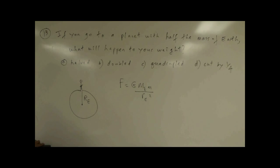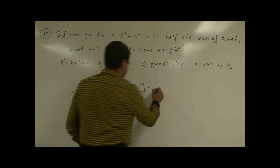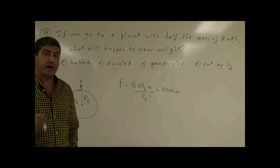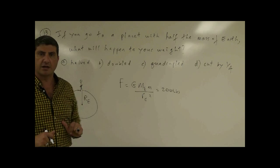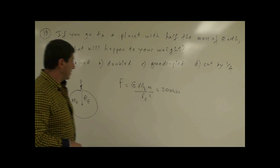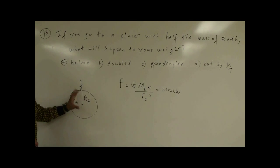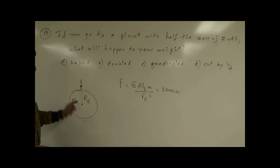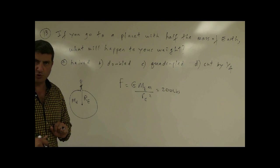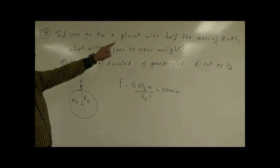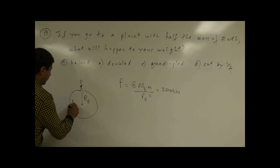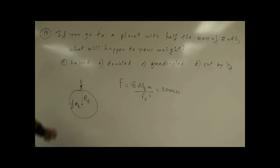In this case, imagine that your weight is 200 pounds. Weight is measured either in pounds or newtons — let's measure it in pounds. Now if I do anything to tweak this, if you go to another planet which has the same radius but a different mass, what's going to happen to your weight? In this problem it says you go to a planet with half the mass. So imagine you go to another planet that has half the mass of the Earth, but keeping the radius the same.